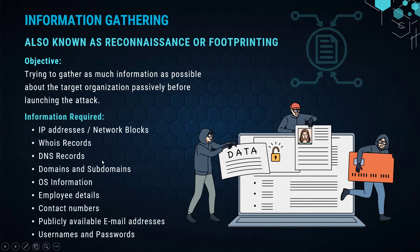The information gathered includes: IP addresses of the organization, network blocks, WHOIS records, DNS server records, domains and subdomains, operating system information — whether they run Windows or Linux servers — employee details, contact numbers, email addresses, usernames, and passwords if any were leaked in earlier data breaches. Believe it or not, all of this information is readily available on the internet; you just need to know where to find it.